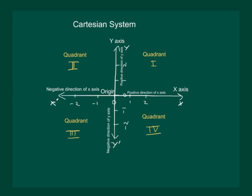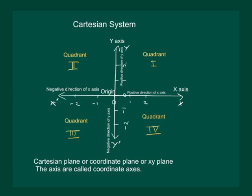So, now our plane consists of the 2 axis that is x-axis and y-axis and 4 quadrants. And we can call it Cartesian plane or the coordinate plane or we can even say it is an x-y plane. And the 2 axis are called coordinate axes.